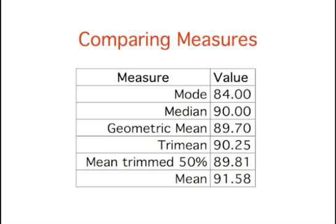As is typical of distributions with a positive skew, the mean is higher than the median. You can also see that the geometric mean is lower than all measures, except the mode.